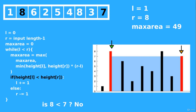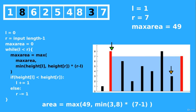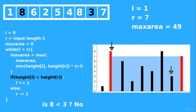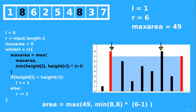The building at the left pointer is bigger, so we move the right pointer to the left to point to position 7. On the next iteration we find the maximum between 49 and 18, which is still 49. The left building is bigger than the right, so we move the right pointer again. I'll let you try a couple of iterations yourself from here.